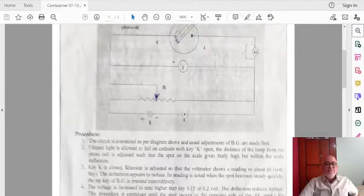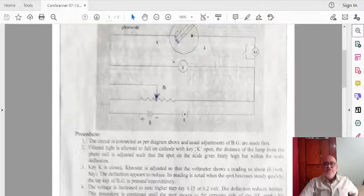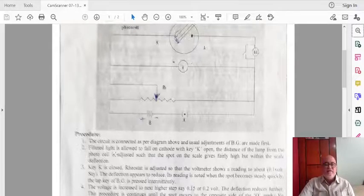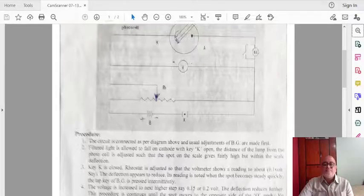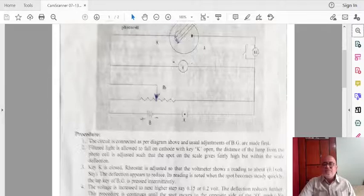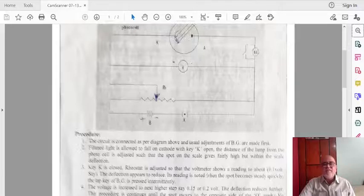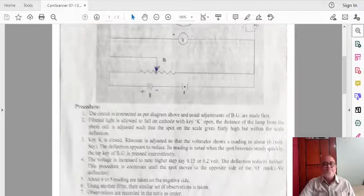Now we will see how this experiment is performed. Here the procedure is written. The circuit is connected as per the diagram above, and usual adjustment of ballistic galvanometer is made first. Then filtered light, just we talked about the filter, that red filter, green filter, etc. The filtered light is allowed to fall on cathode. Then distance of the lamp from the photocell is adjusted such that the spot on the scale gives fairly high but within the scale deflection.